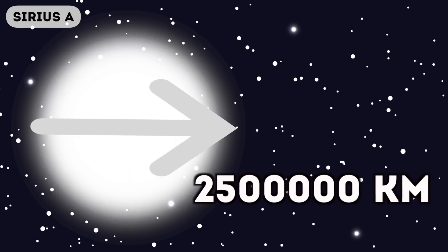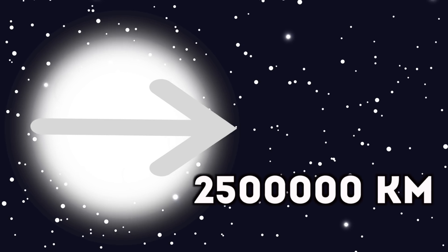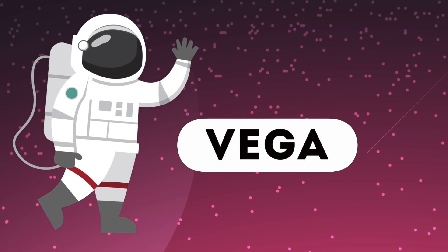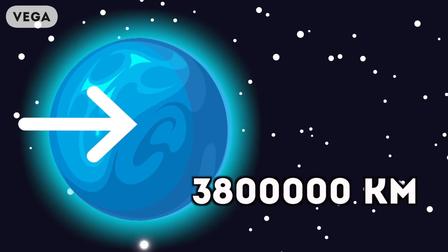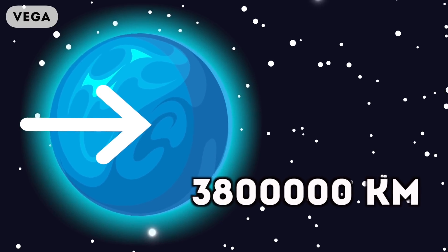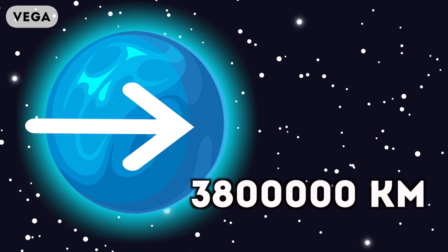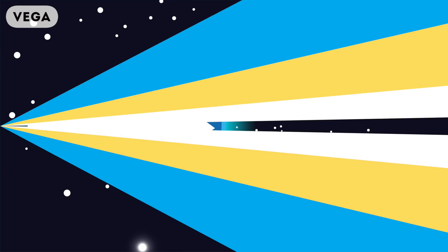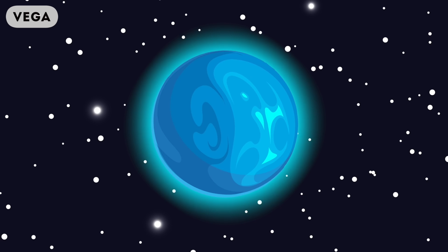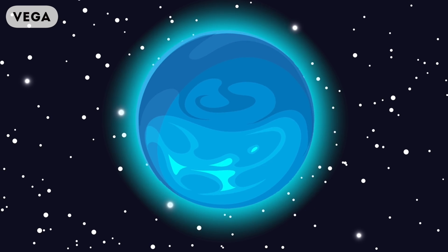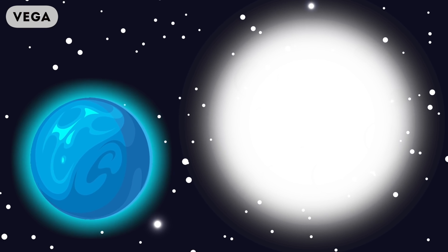Next up is Vega. Vega is an absolutely colossal planet at 3.8 million kilometers in diameter. It's so big it actually has a family of planets surrounding it and it has around 10 times the mass of Jupiter, the largest planet in our solar system. If you thought Sirius A was big, then here it is compared to Vega.